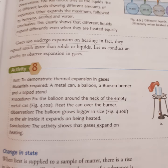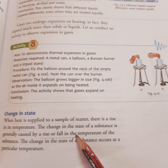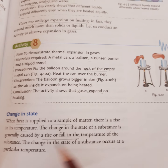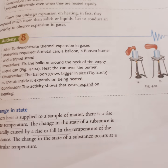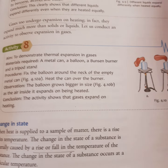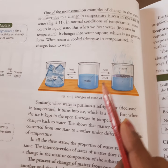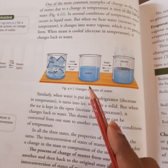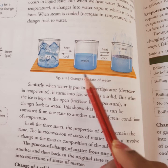Now, change of state: when heat is supplied to a sample of matter there is a rise in temperature. The change in the state of a substance is generally caused by a rise or fall in temperature, and this change takes place at a particular temperature. One of the most common examples is the change of state of water.